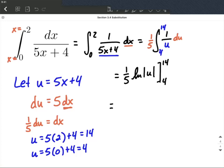So to finish this up, we'll go ahead and say, well, this is 1 5th natural log of the absolute value of 14 minus 1 5th times the natural log of the absolute value of 4. That's not going to work out to be a nice solution. That's an exact solution, exactly how it's written. If you need an approximation, you could get your calculator out and punch that into your calculator to get an approximation.